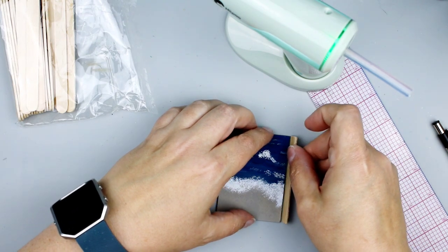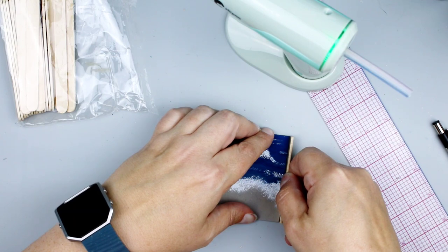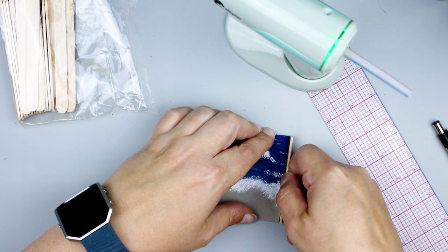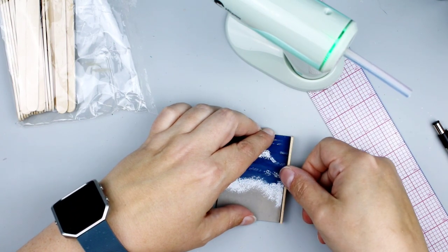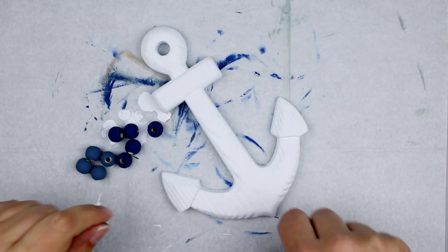So next I created a frame for my piece of wood using regular craft sticks. I just cut them down to the size I needed and glued them around the edge, painted it with agave and there you go. Easy peasy.